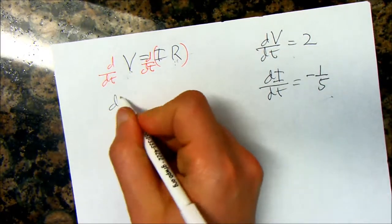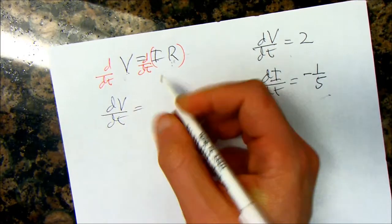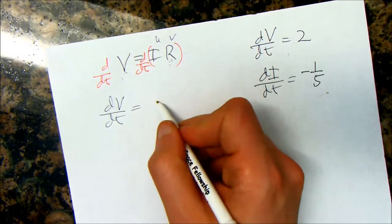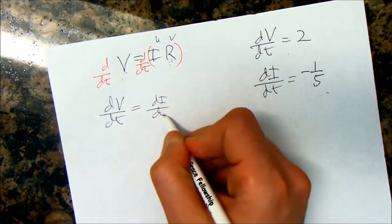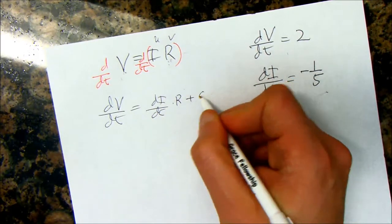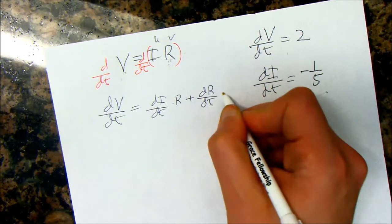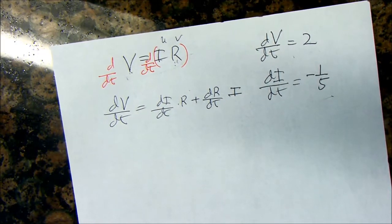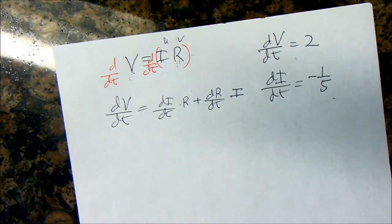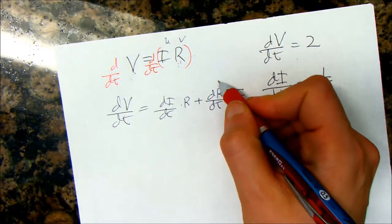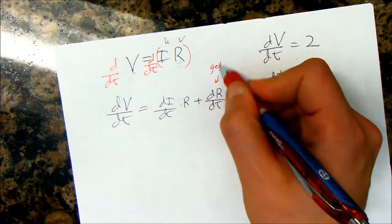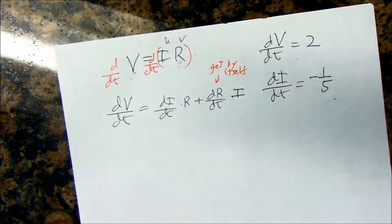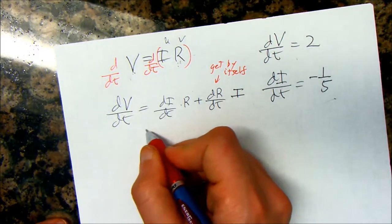The way I would do it is to realize that all of these are going to depend on time. So, that means you're going to have to do a product rule here. Because I have two things that are depending on time. R is not constant. I is not constant. So, let's go ahead and take that derivative. Then, we're going to get dV/dt is equal to, this is my U, my V. So, U prime is dI/dt times R. V prime is dR/dt times I.